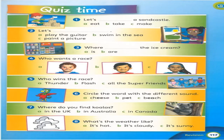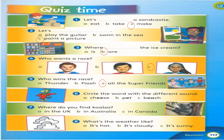Alright, so now please turn to page 117, quiz time. Look at the first picture and the first sentence. Number one: 'Last a sandcastle' — the answer should be Mac. Number two: 'Last paint a picture' — you have to refer to the pictures to answer. Number three: Look at the pictures on your left-hand side. Number four: 'Who wants a race?' — the answer should be Flash. Number five: 'Who wins the race?' — the answer should be all the super friends. Number six: Circle the word with the different sound.